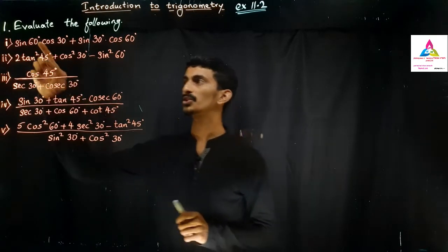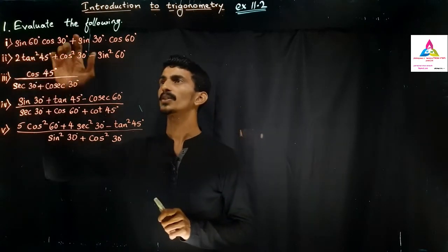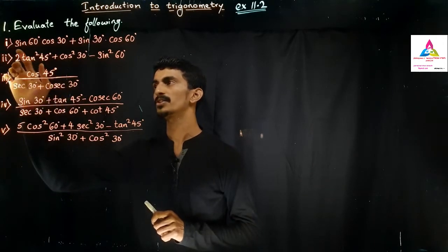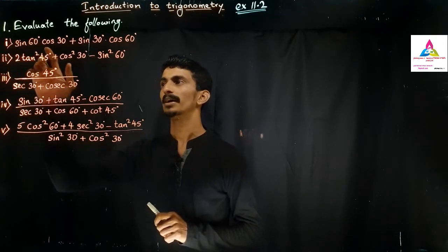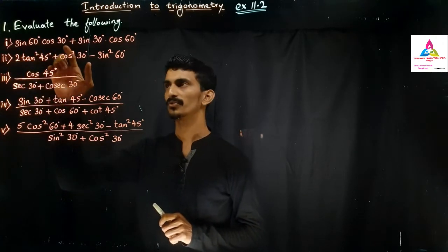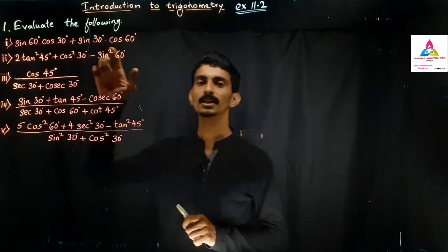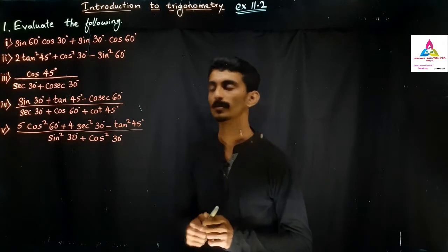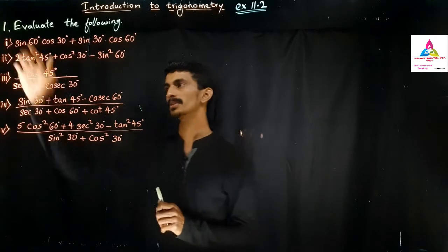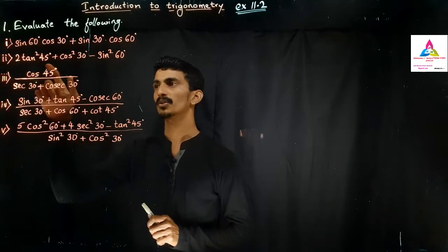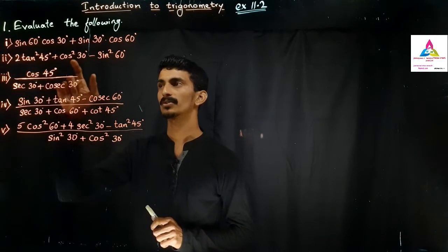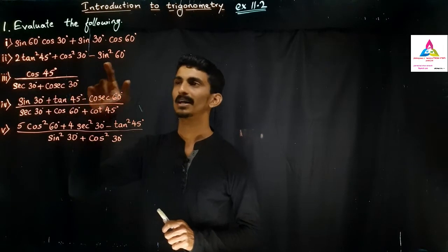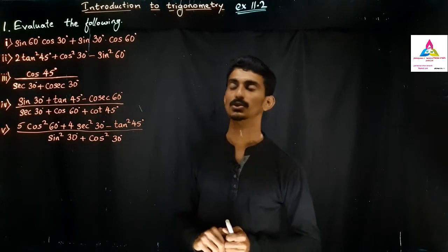The first question is: evaluate sine 60° × cos 30° + sine 30° × cos 60°. The second question is: 2 tan² 45° + cos² 30° − sine² 60°.